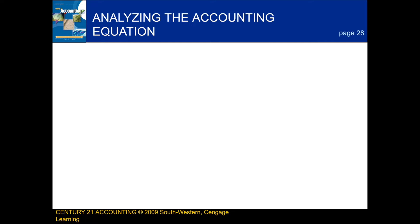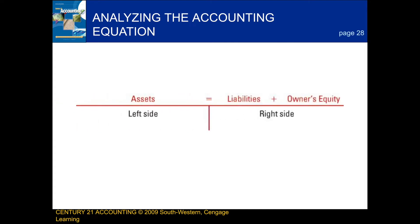The normal balance of an account is the side of the account that is increased. Next we're going to be talking about analyzing the accounting equation. When we analyze the accounting equation, any asset account will be recorded on the left side, and any liability or owner's equity account will be recorded on the right side.